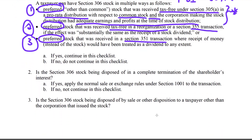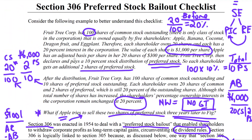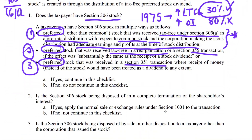If we have one of these three situations, we continue; if not, we have no Section 306 stock. In our Apple situation, we do have Section 306 stock because the two shares of preferred stock were not taxable under Section 305 when received. So now that Apple is trying to sell later, we have Section 306 stock issues.